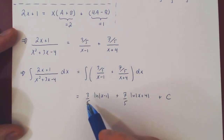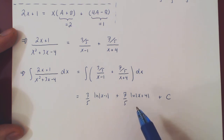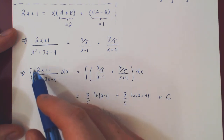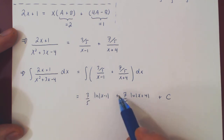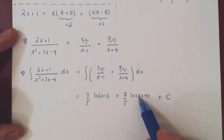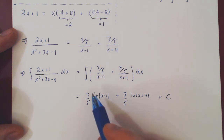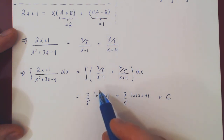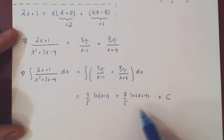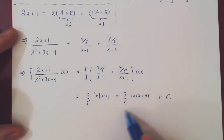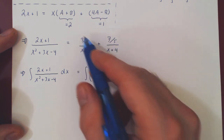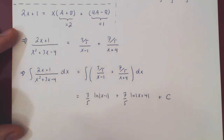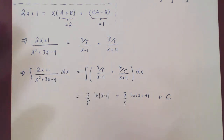It's not at all obvious that the antiderivative of this rational function is a linear combination of two logarithmic functions. But as always, you can verify: differentiating this result with respect to x and combining into a single fraction will return the original rational function.